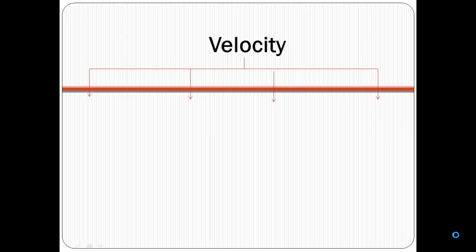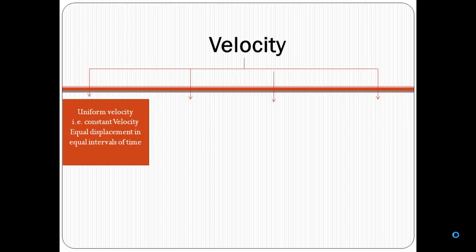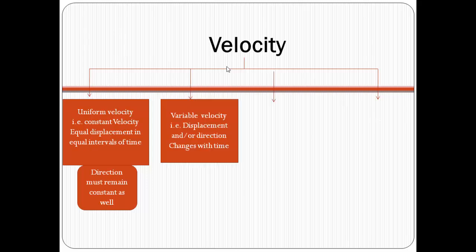Next is the types of velocity. First, uniform velocity — that is equal displacement in equal intervals of time. Along with magnitude, the direction must remain constant as well, because velocity is a vector quantity. Second is variable velocity — that is displacement and/or direction changes with time. Either magnitude can change, direction can change, or both can change, and such velocity is called variable velocity or non-uniform velocity.